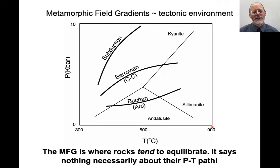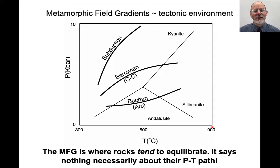Those minerals are not stable at lower temperatures and pressures, and as you walk in a particular direction, the pressures and temperatures increase. This is called the metamorphic field gradient. These gradients fall into three broad classes: a low-pressure series called a Buchan series, characteristic of arc metamorphism; a high-pressure series, characteristic of subduction zones; and a Barrovian metamorphic field gradient, characteristic of continent-continent collisions.